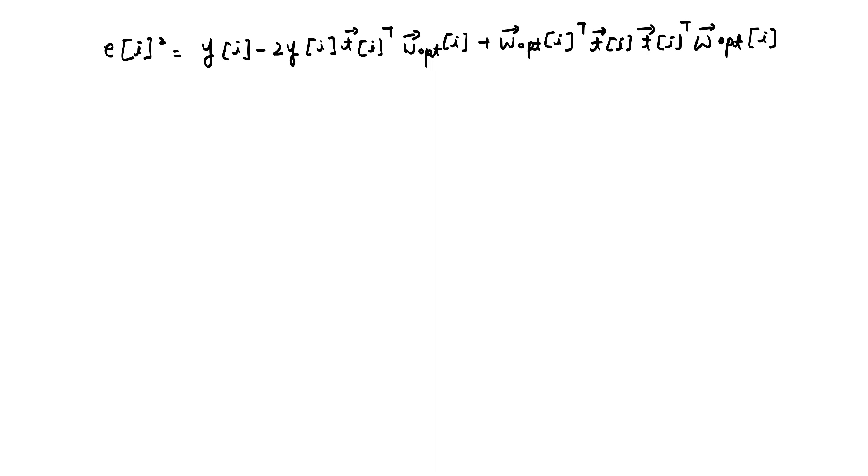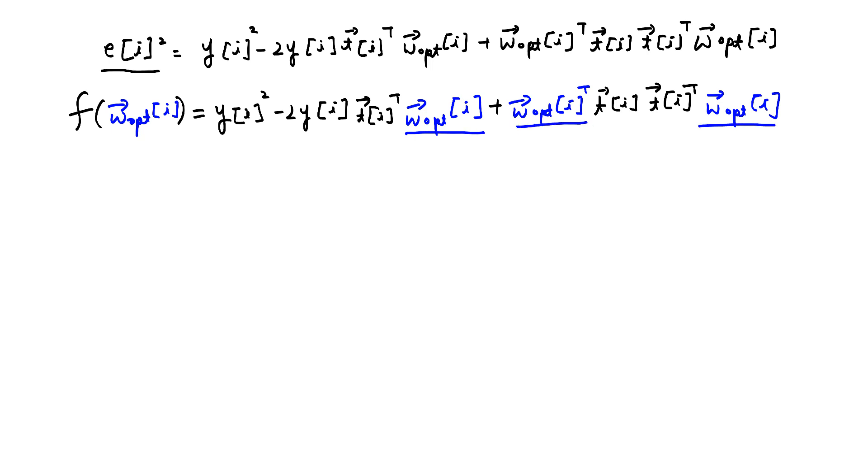Now I want to show that this e of i squared is actually a function of w opt of i. Let me rewrite this function. w opt of i here, w opt of i, and w opt of i here.